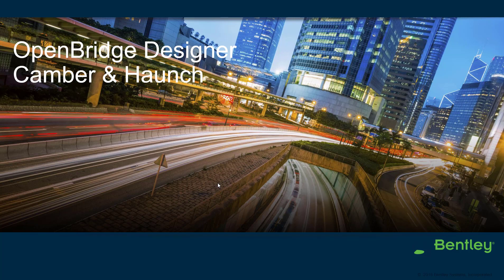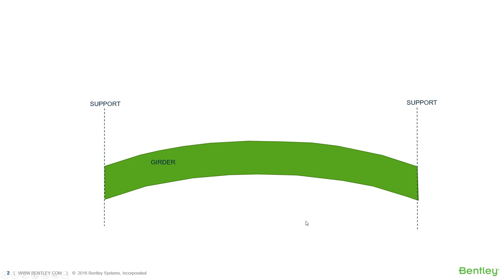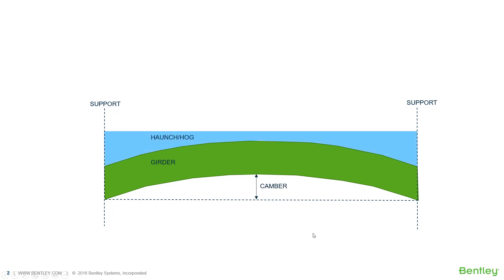In this video I'm going to show how OpenBridge Designer handles camber and haunch. Before going into the video I will explain the concept. We can see here a girder and the support lines — just one single span in the longitudinal direction. The camber is shown here on the girder.